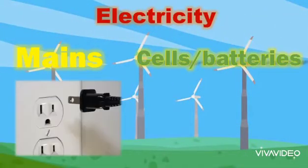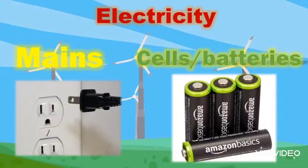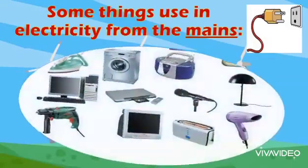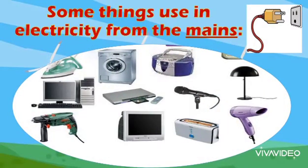Mains and cells are sources of electricity. Things that you plug in use mains electricity. Mains electricity is very powerful. It can be dangerous.